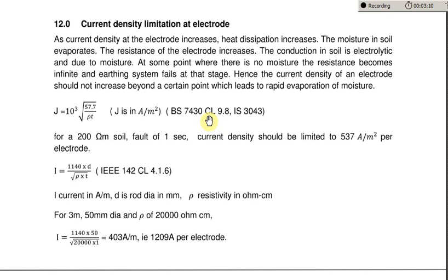Now you have to observe one thing here. What does this 537 amps per meter square mean? Suppose you have a fault level of 40 kA. The actual fault may be around 30 kA, and all of this 30 kA does not enter the neutral through the earth electrode — only some portion enters through the earth electrode. So the fault current which enters the earth only flows through the earth electrode, and we may need around 2 to 4 earth electrodes connected to the neutral.